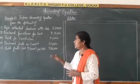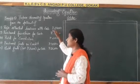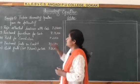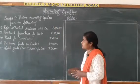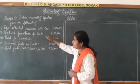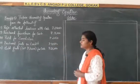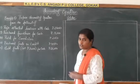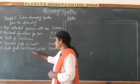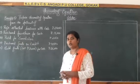Let us see one example of accounting equation. Here they have given transactions, and with these transactions you are going to prepare the accounting equation. The transactions are: Raju started business with cash ₹2,50,000; purchased furniture for cash ₹35,000; paid commission ₹2,000; purchased goods on credit ₹40,000; and goods sold — actual cost is ₹20,000 — sold for ₹26,000.